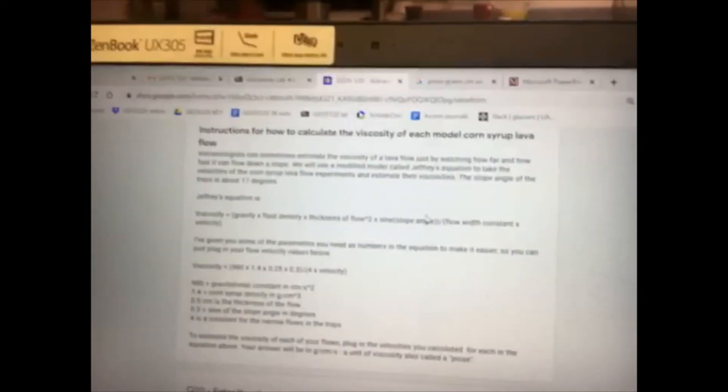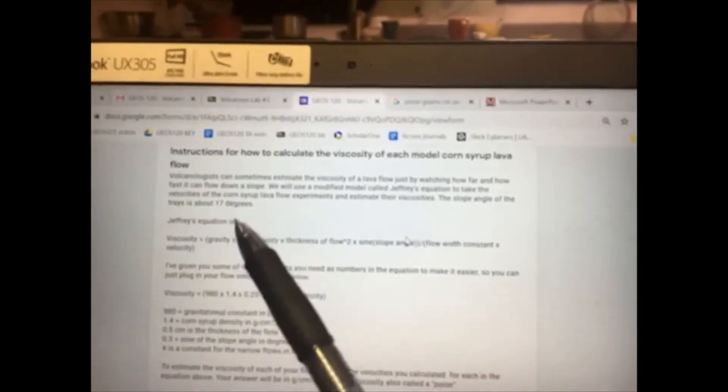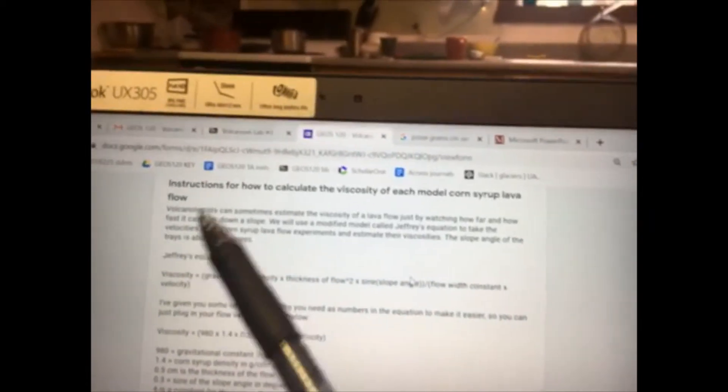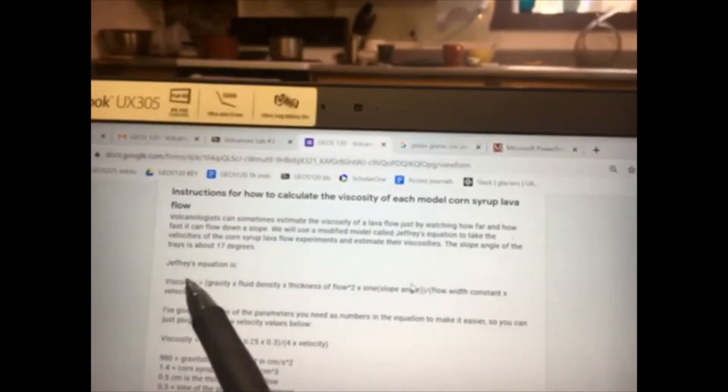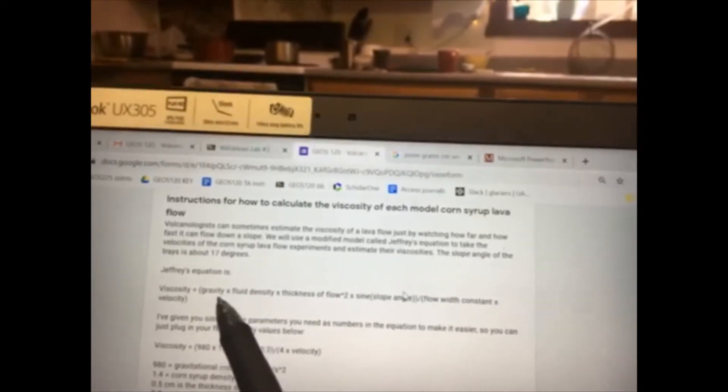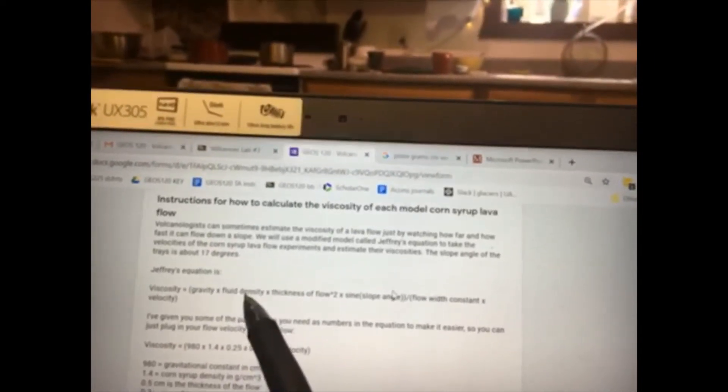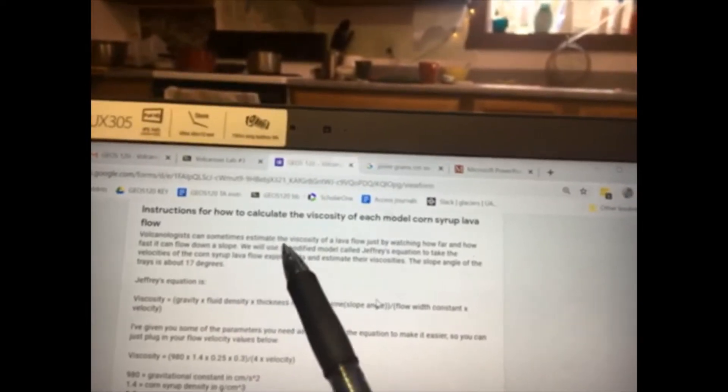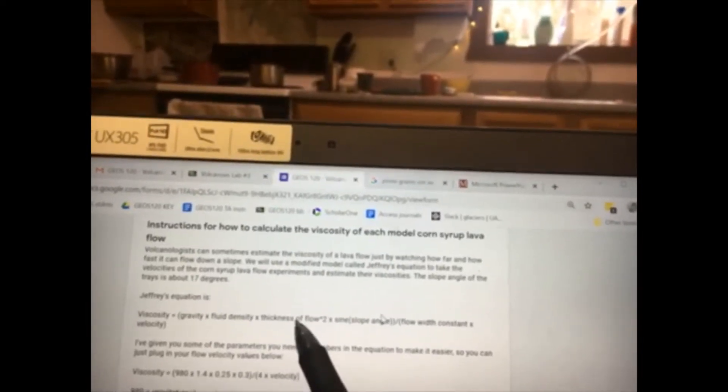Okay, so here is how you calculate viscosity using Jeffrey's equation. Viscosity is the gravitational constant times the density of the fluid flowing downhill times the square of the flow thickness